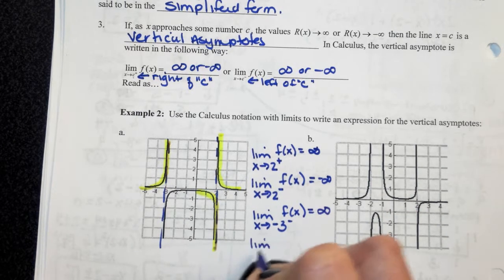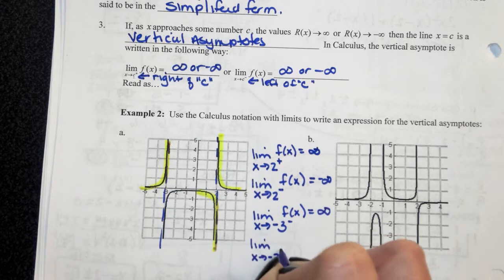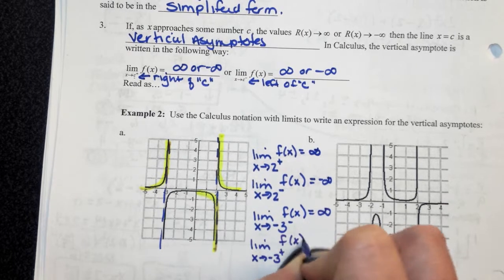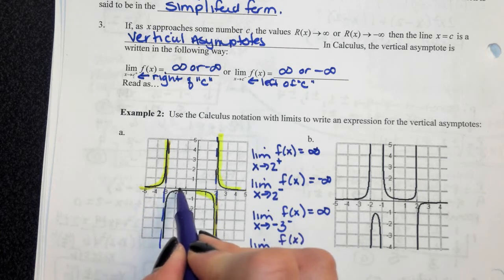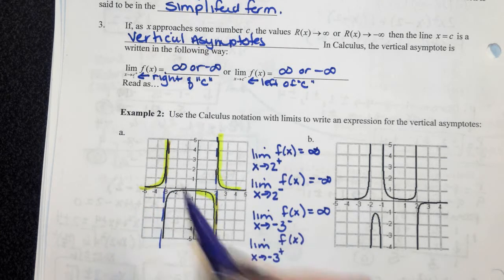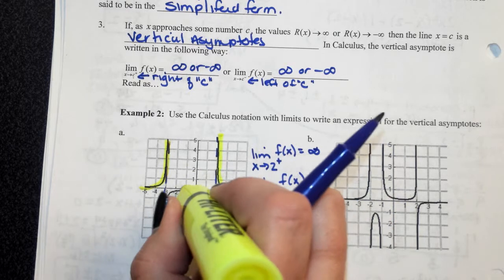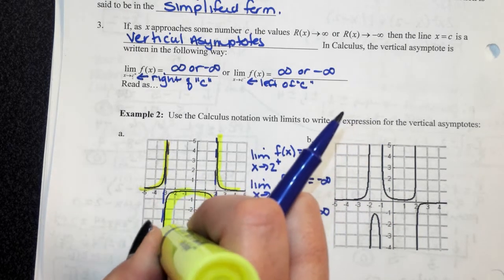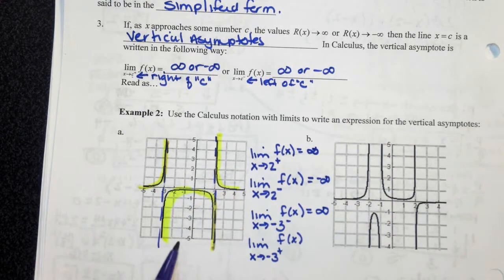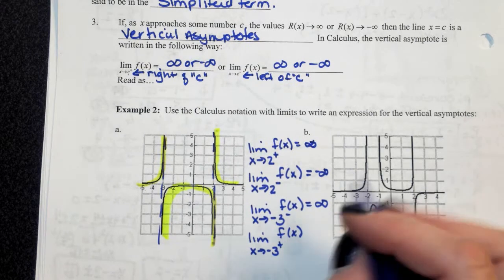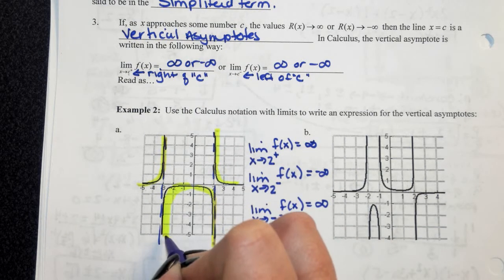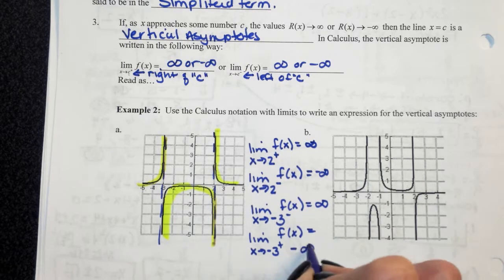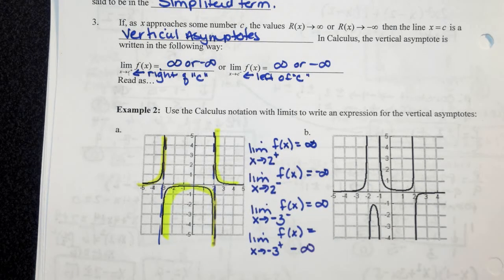The limit as x approaches negative 3 from the right — take your pencil, go to the right of negative 3, and trace your graph. As you're getting closer and closer to negative 3 from the right, what direction are you approaching? We're going down, so we're going towards negative infinity. Any questions on that limit notation?